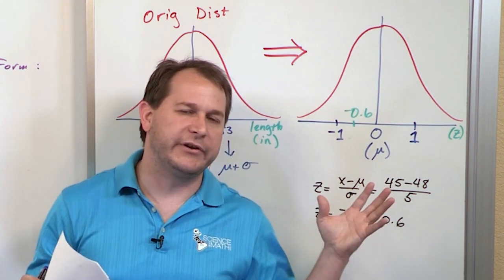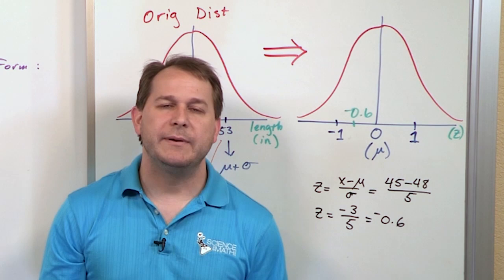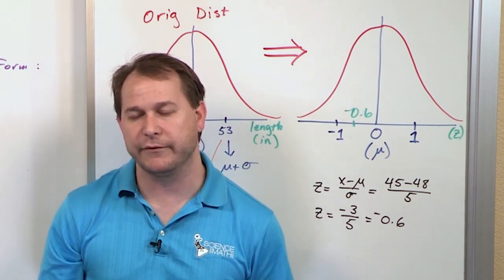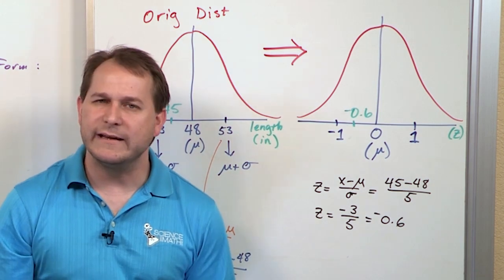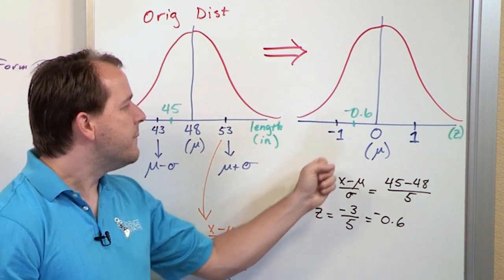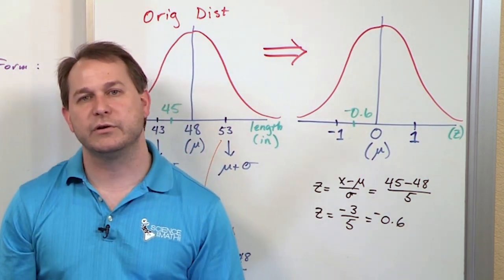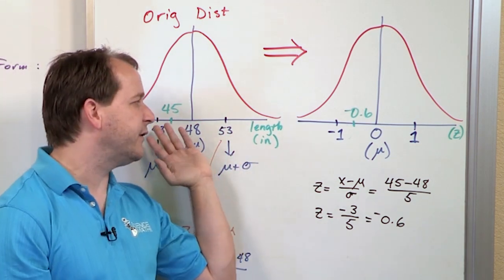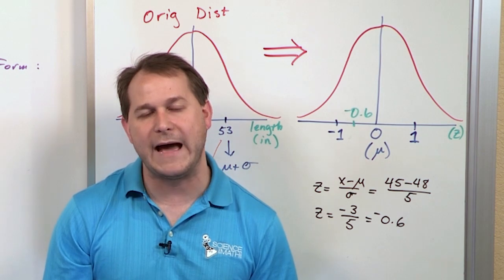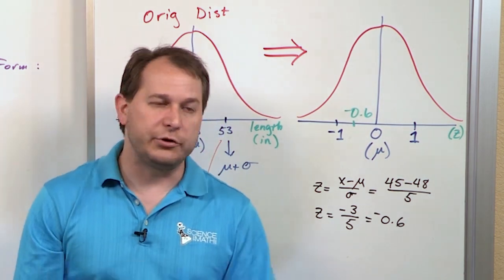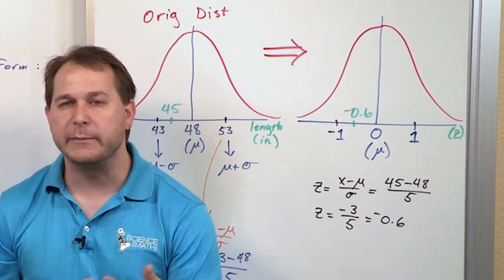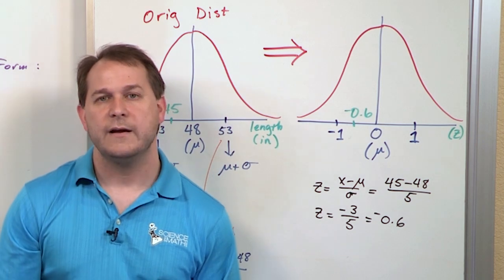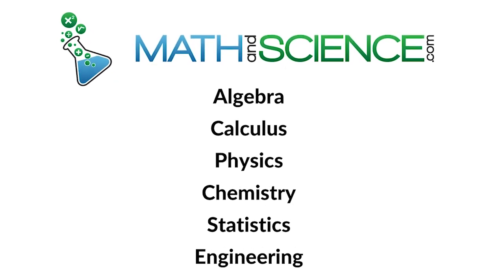Going into the next lesson, make sure you understand this concept. The idea is you start with your original distribution, convert it to standard form so you can use your tables. In the next section, we'll do a few more of these problems for practice. Z-scores are the only thing you can look up in the back of your book — it's a table of z-scores and probabilities. You have to convert any values you care about to z-values to look them up. Learn anything at mathandscience.com.